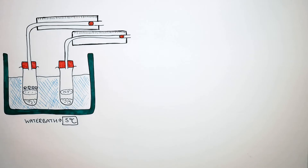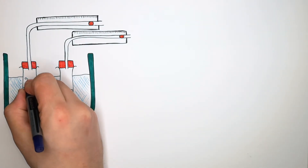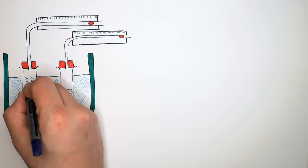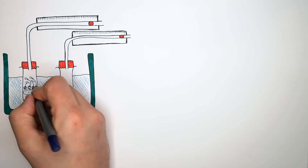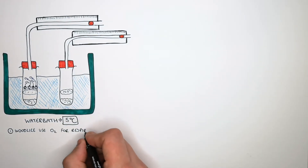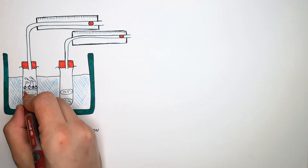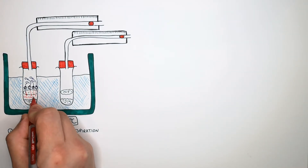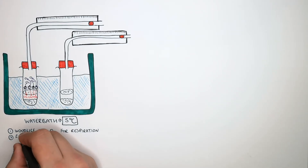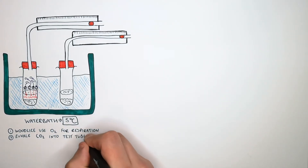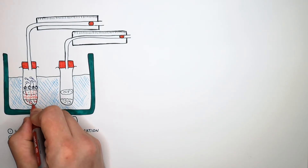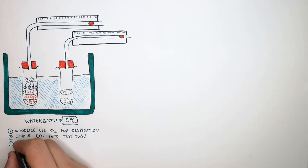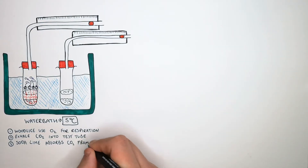You then place a respirometer into each of the test tubes. The organisms inside the test tubes are now going to start respiring — they're going to use the oxygen from the atmosphere inside the test tube for respiration. One of the byproducts of respiration that they exhale is carbon dioxide. The soda lime placed at the bottom of the test tube is going to absorb that carbon dioxide from the atmosphere.